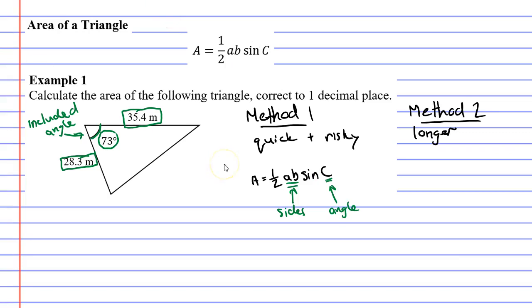So when we write our formula down we're going to go area equals half times A times B, so A and B are our sides of 28.3 and 35.4. Doesn't really matter what order you put them in. Next in the formula it says that we're going to use sine, so we multiply it by sine and then capital C being our angle. We'll write that down as 73 degrees.